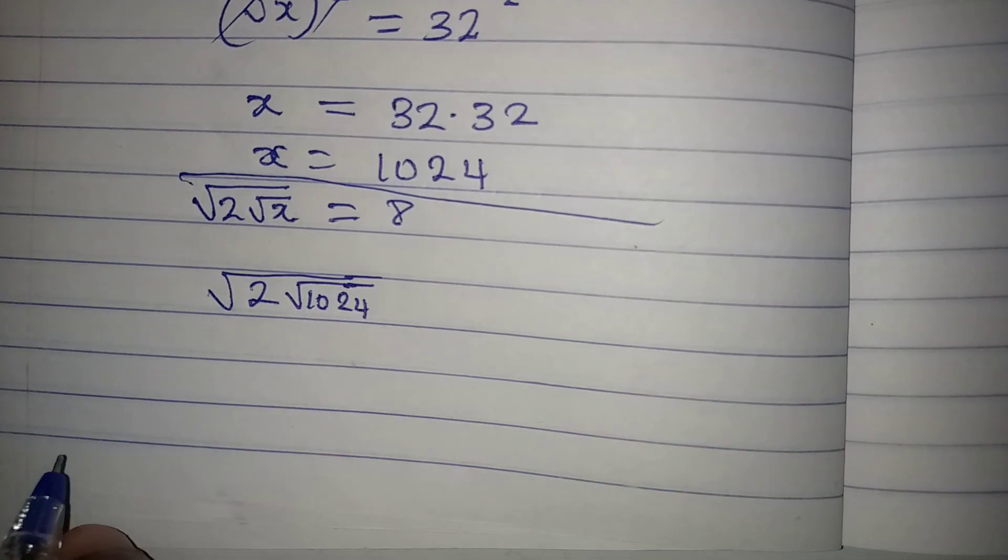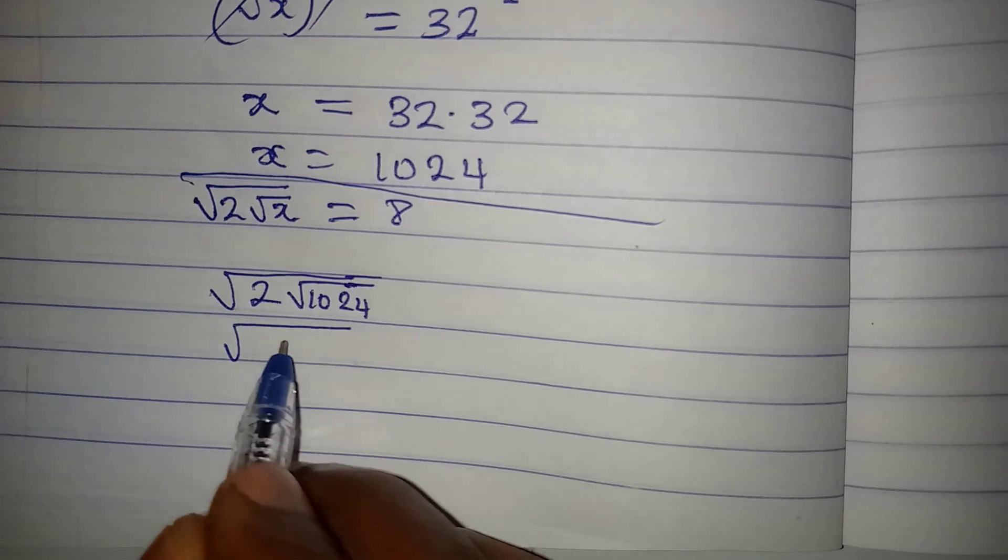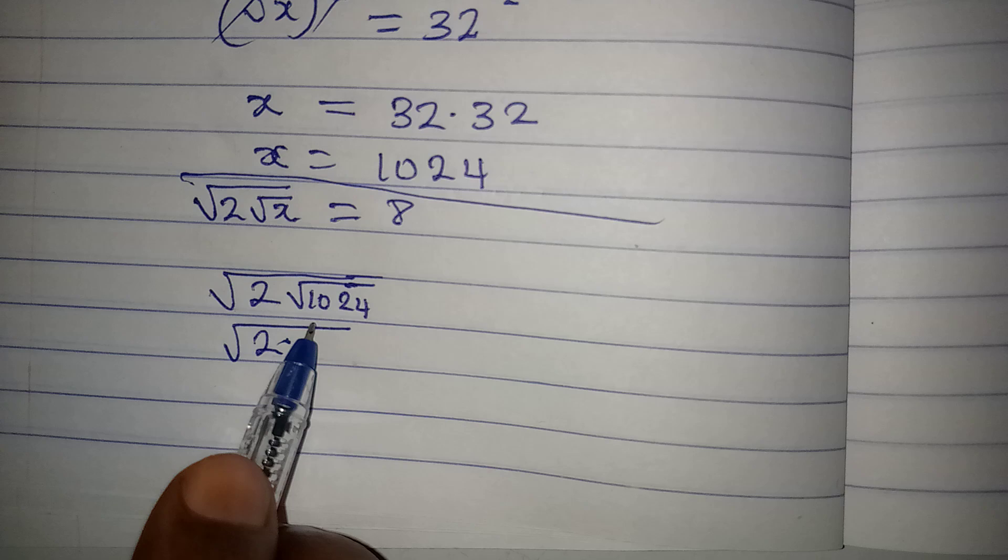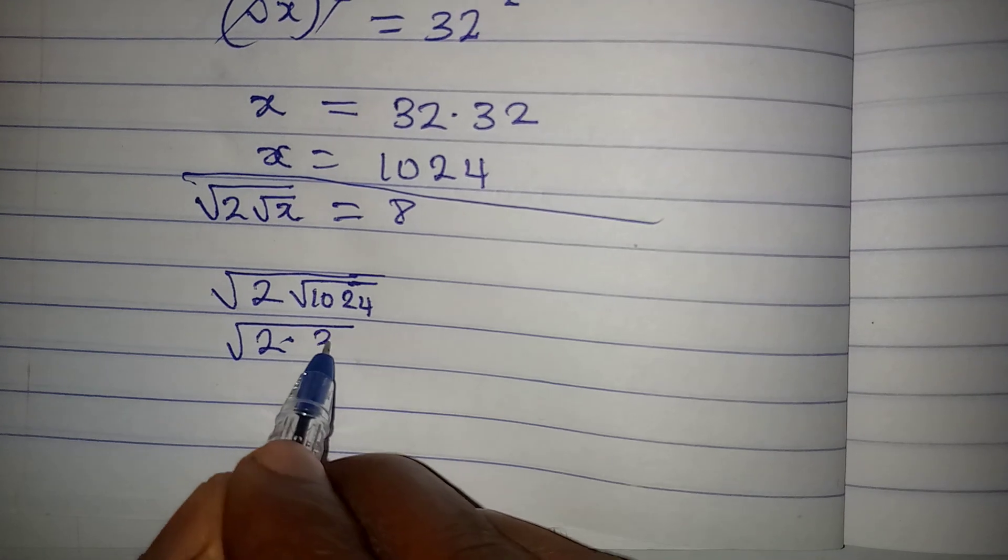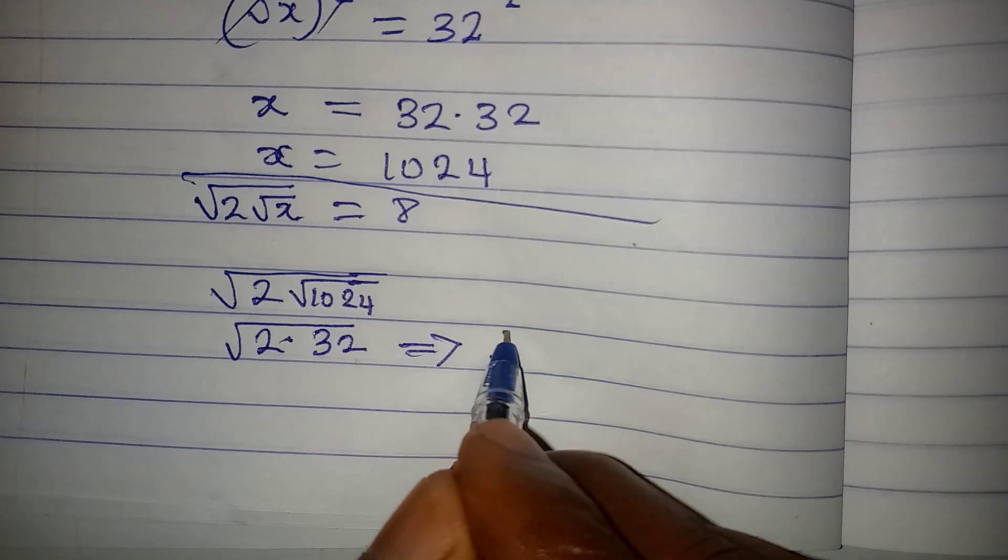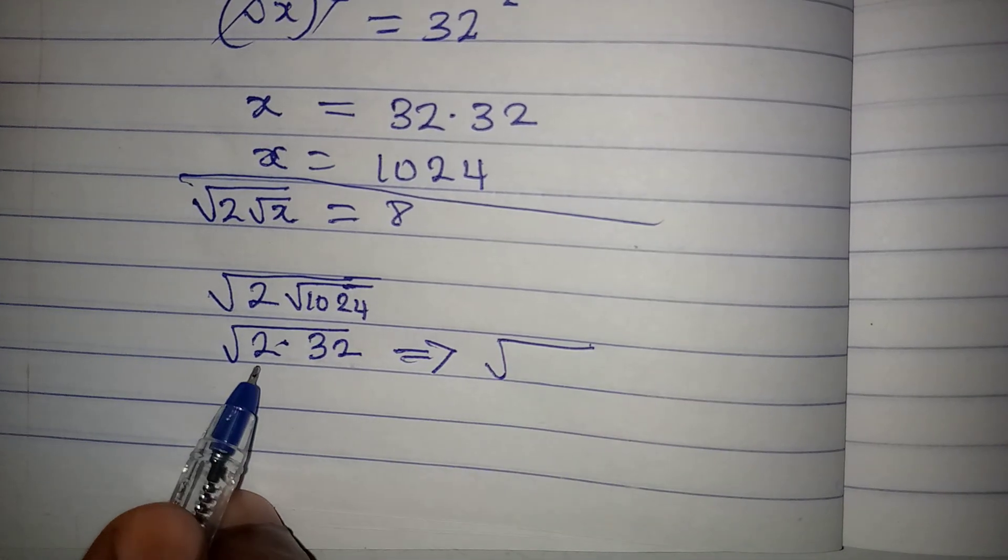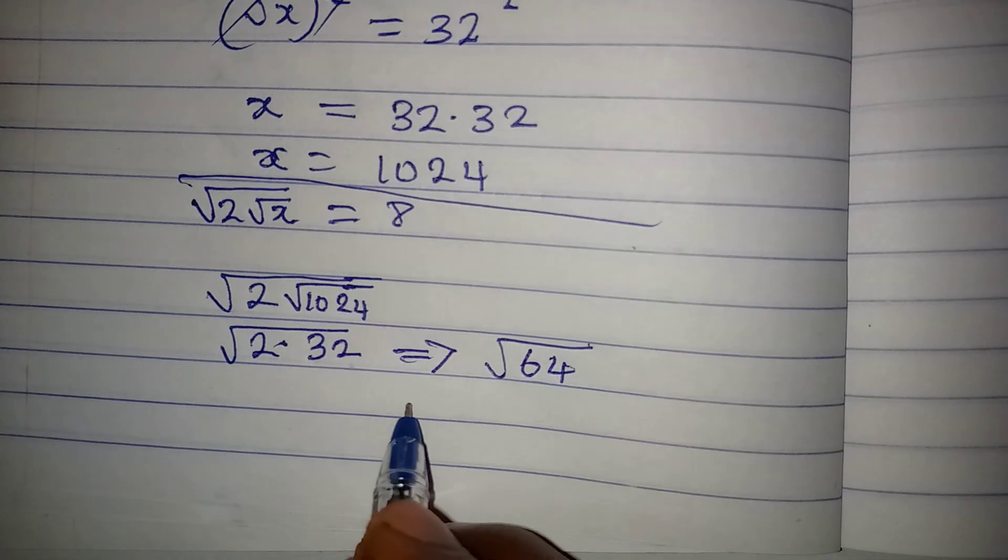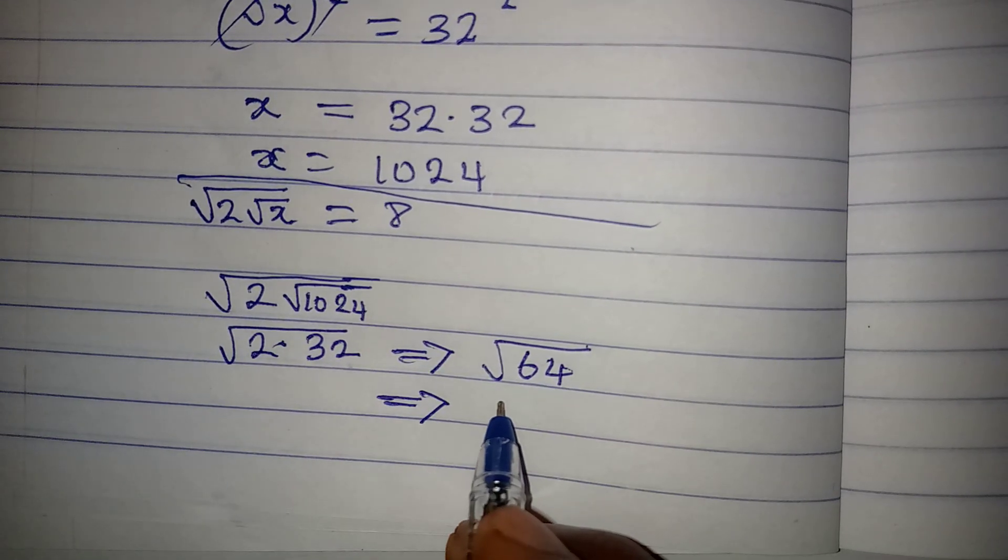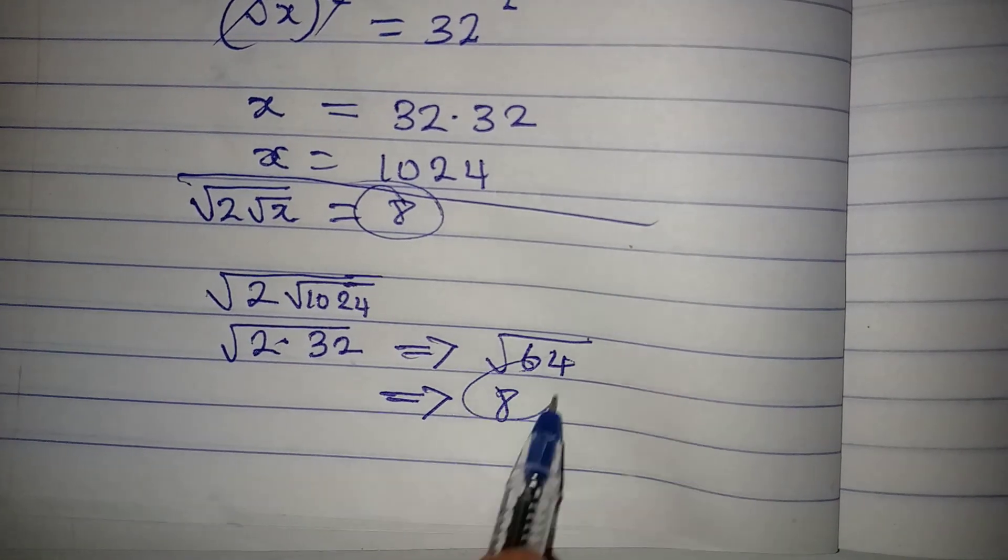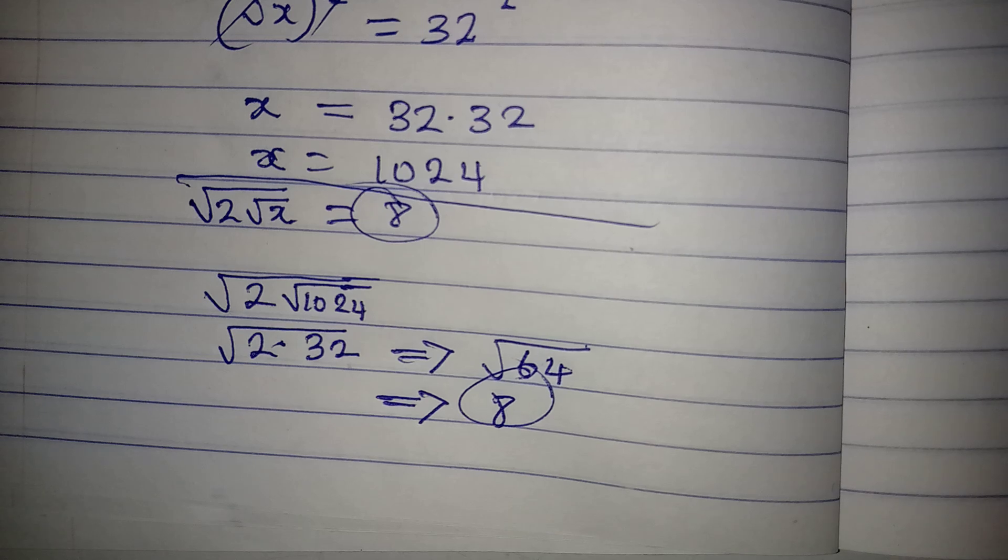Will this give us 8? Square root of 1024 is 32. This implies that we are looking for square root of 2 times 32, which will give us 64, and this will give us 8. Remember it is 8 we had on the right hand side.